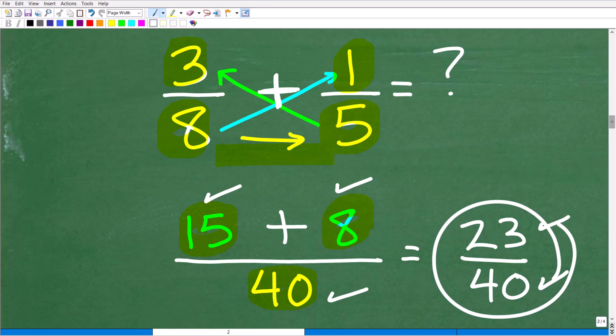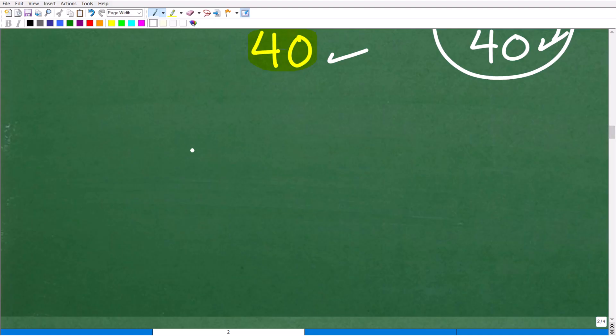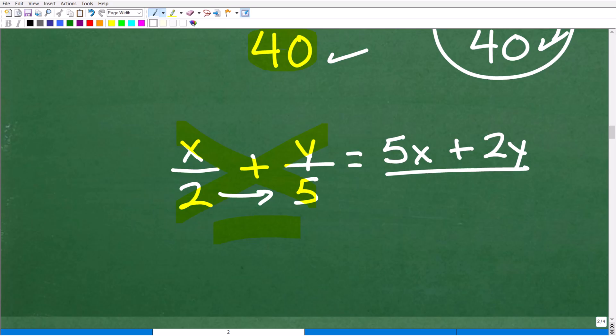The great thing about the bow tie method is it works with algebra. For example, if I had x over 2 plus y over 5 and I wanted to add these two algebraic fractions, it works the same way. Here would be 5 times x, which would be 5x, plus I'm adding here, 2 times y, which is 2y, all over 2 times 5, which would be 10.